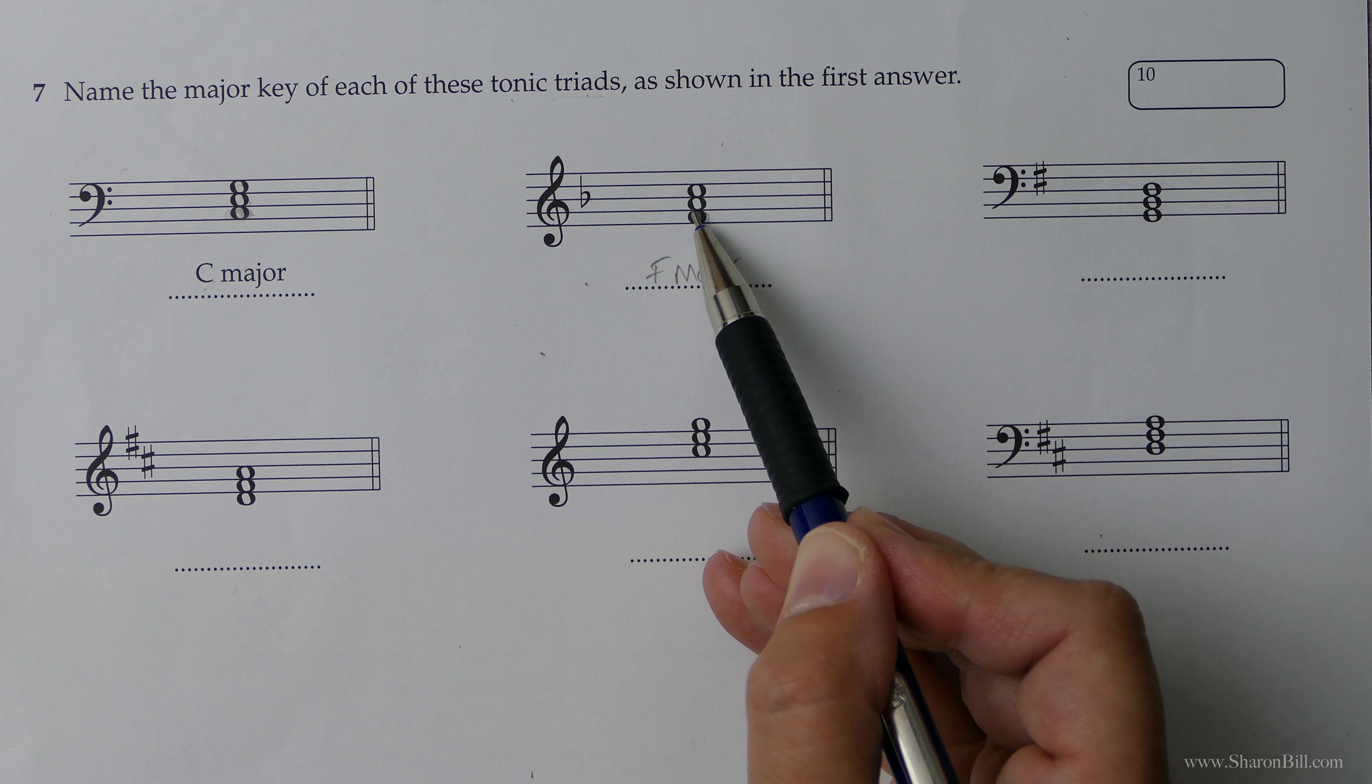So this next one. We have a key signature of two sharps. F sharps and C sharps. Which we know is D major. So that's kind of job done. But to double check. We're in the treble clef. There's middle C. The next door note up is D. There's our tonic. D for D major. First, third, fifth. D, F, A. Of course it's F sharp. But your key signature will deal with that for you.